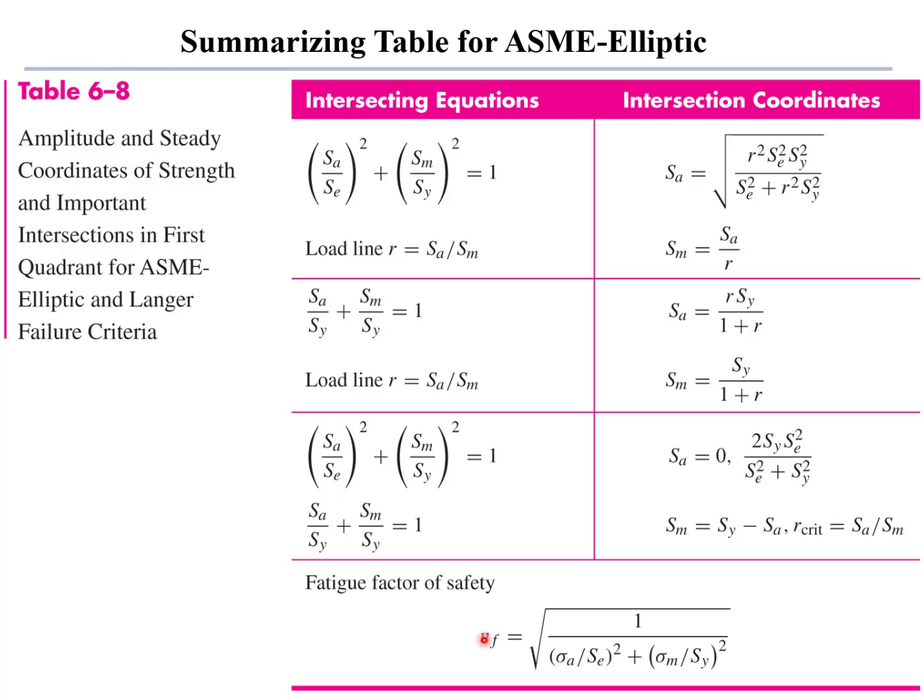Same thing is true also for the ASME elliptic, where now the fatigue factor of safety, and again, these factors of safety are for infinite life in these equations. We divide the stress amplitude by the endurance strength and square it. We add the mean stress divided by the yield strength squared. Take one over all that square root gives us the fatigue factor of safety for infinite life using the ASME elliptic failure criteria.